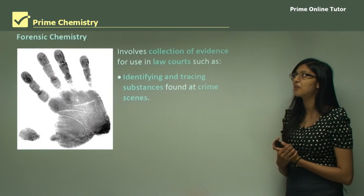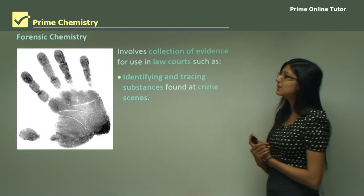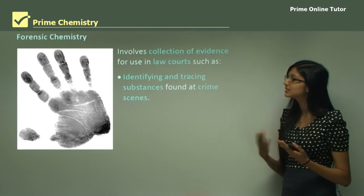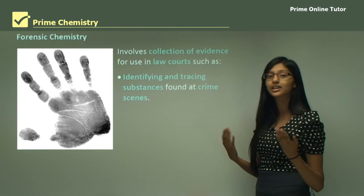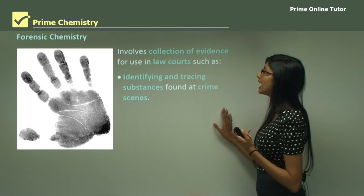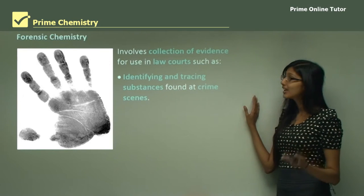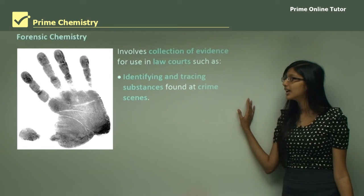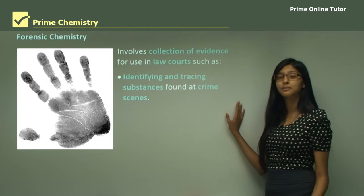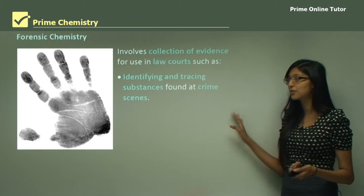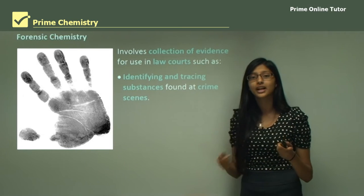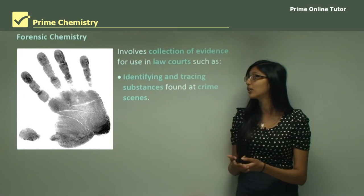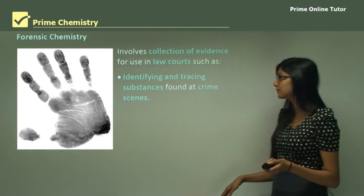Forensic chemistry — you've probably seen CSI shows on TV. The forensics shown in those programs actually involves chemistry. This branch involves the collection of evidence for use in law courts; forensic chemists identify and trace substances found at crime scenes. For example, they look at DNA samples to identify who performed a crime, and they can also analyse fingerprints.